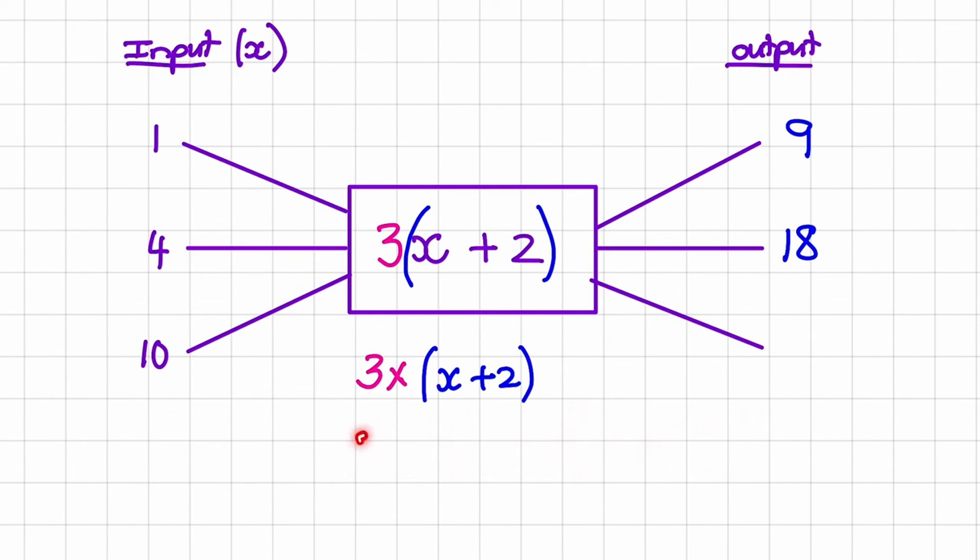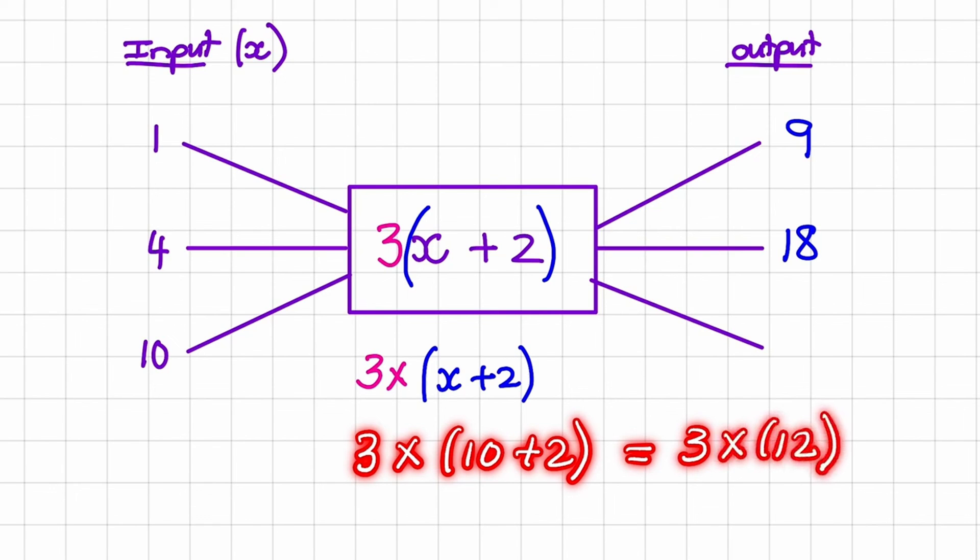So lastly we have 10. So it's 3 times 10 plus 2. So 10 plus 2 becomes 12. So it's 3 times 12. And that is equal to 36.